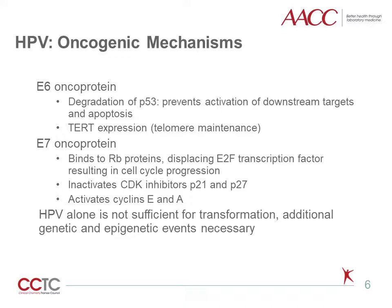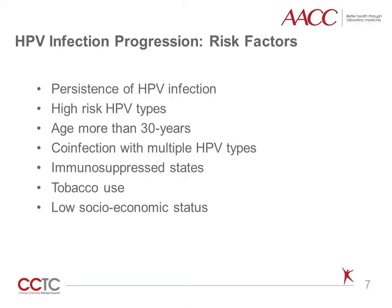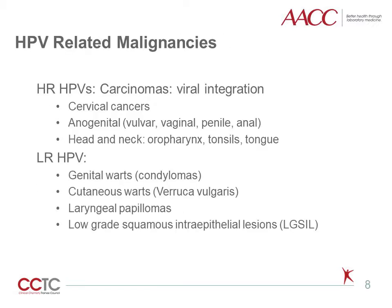However, HPV alone is not sufficient for malignant transformation of cells, requiring additional genetic and epigenetic events. The risk for progression of HPV infection and malignant transformation is increased with persistent HPV infection, high-risk HPV types, increasing age, co-infection with other HPV subtypes, tobacco use, and lower socioeconomic status.